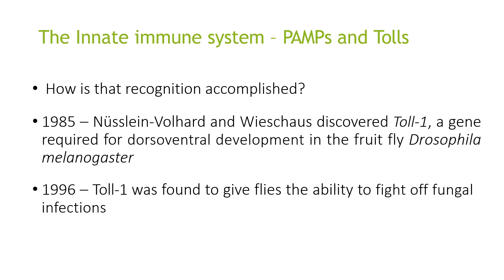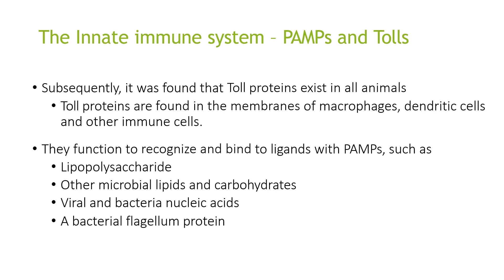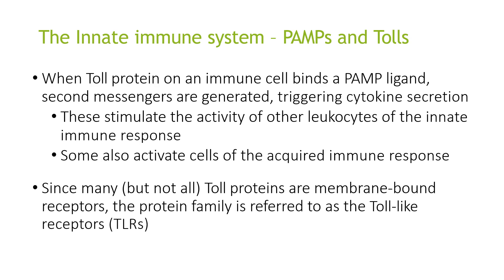In 1996, Toll was found to give flies the ability to fight off fungal infections. It was then discovered that Toll proteins exist in all animals and are found in the membranes of macrophages, dendritic cells and other immune cells. They function to recognise and bind to ligands with pathogen-associated molecular patterns such as lipopolysaccharide, microbial lipids and carbohydrates, viral and bacterial nucleic acids, and bacterial flagellin protein. When a Toll protein on an immune cell binds a PAMP ligand, second messengers are generated, triggering cytokine secretion. These stimulate innate immune responses, and some also activate cells of the acquired immune response. Since many, but not all, Toll proteins are membrane-bound receptors, the protein family is referred to as Toll-like receptors.